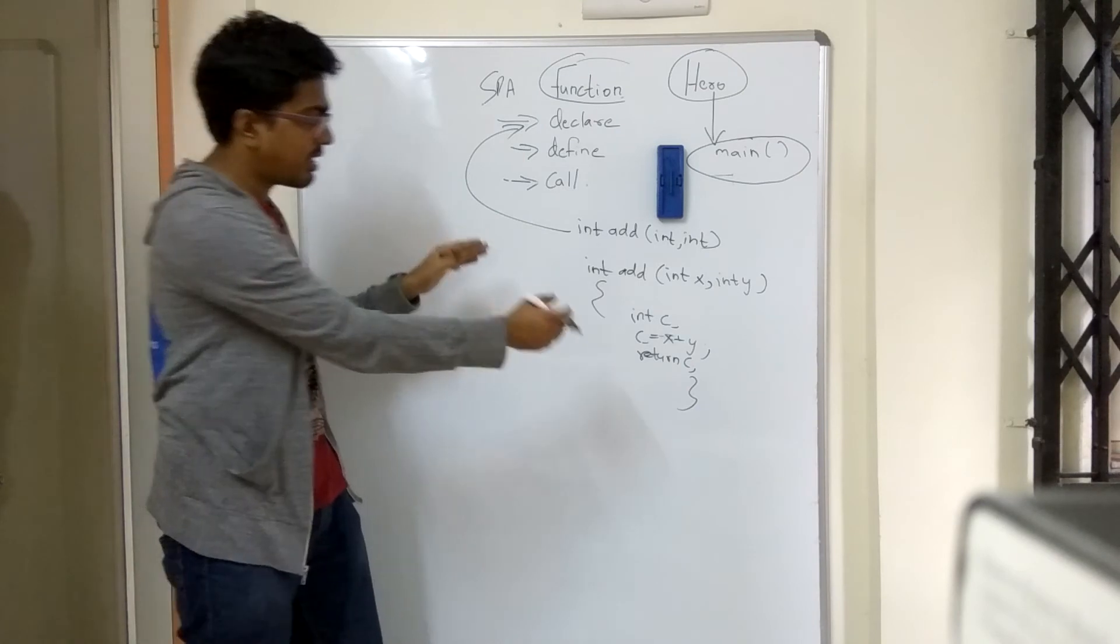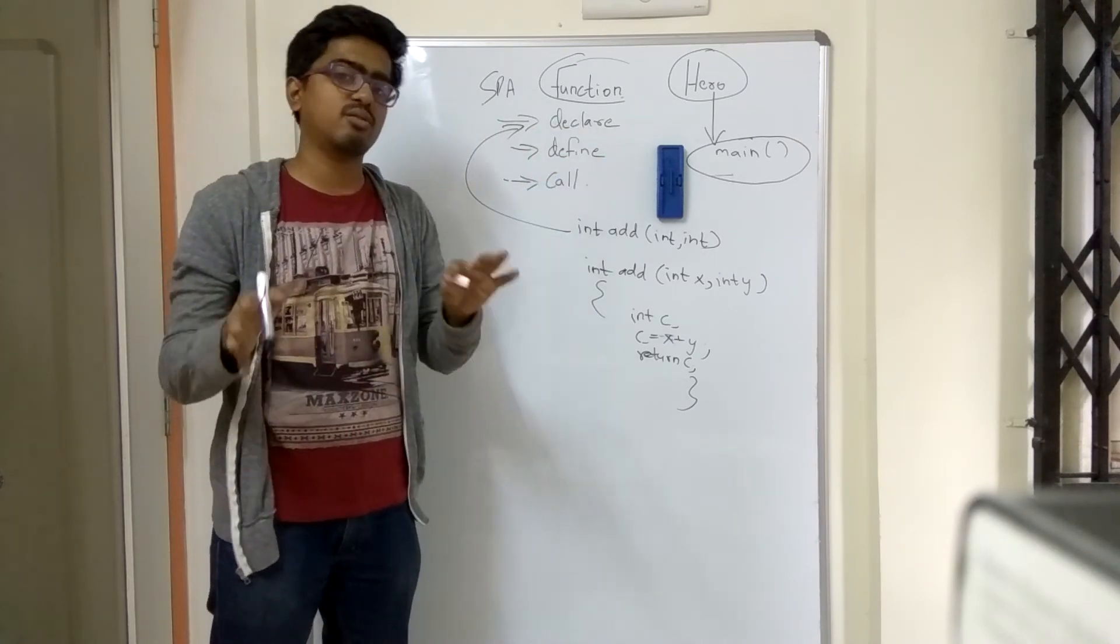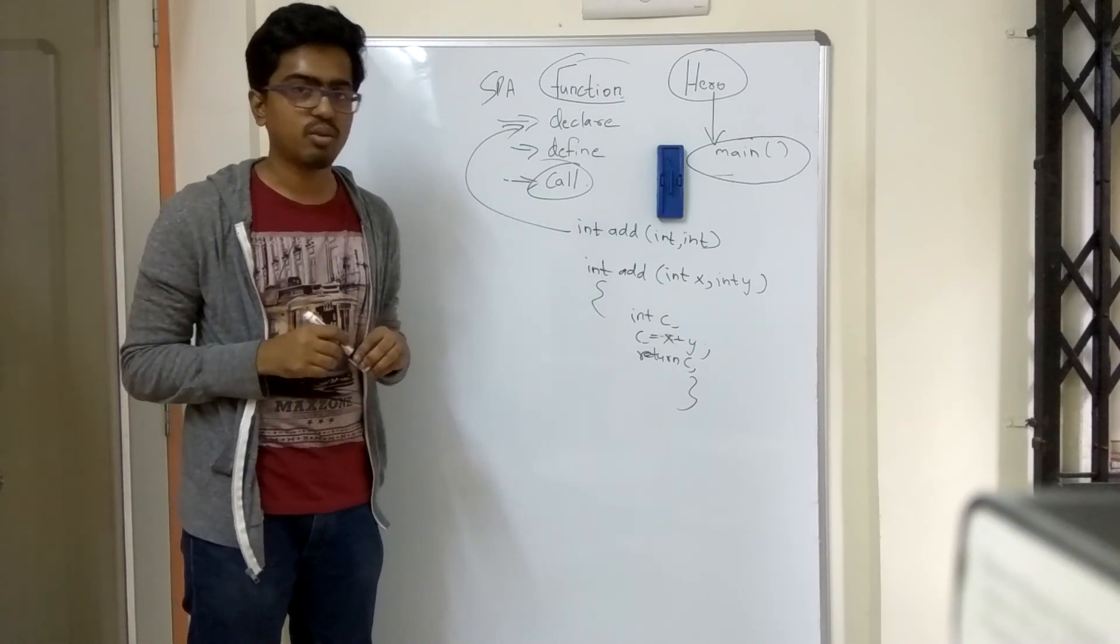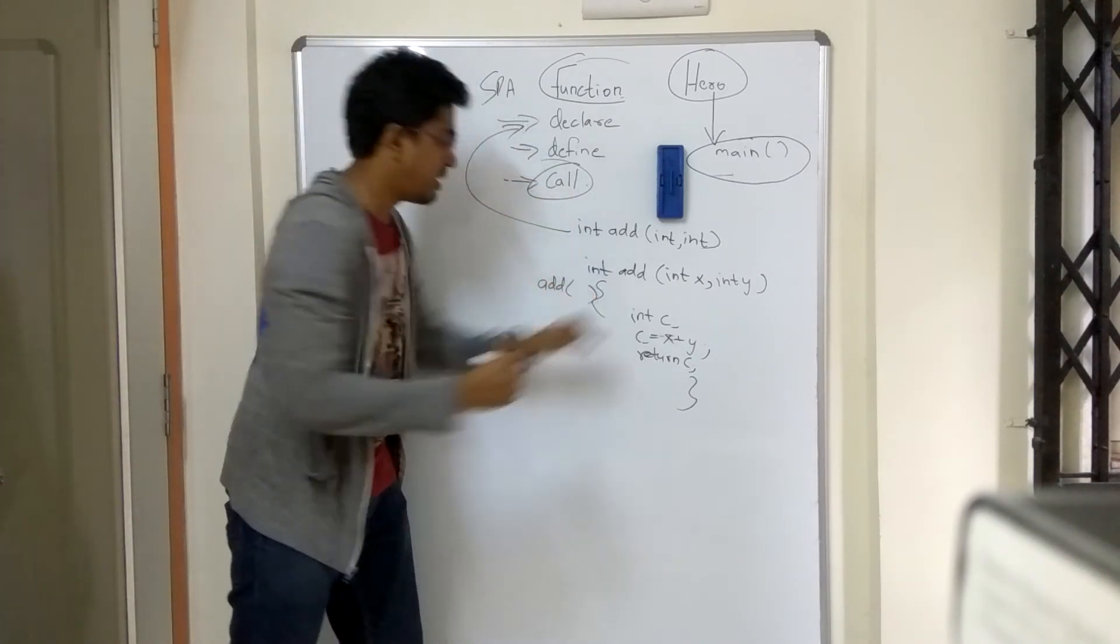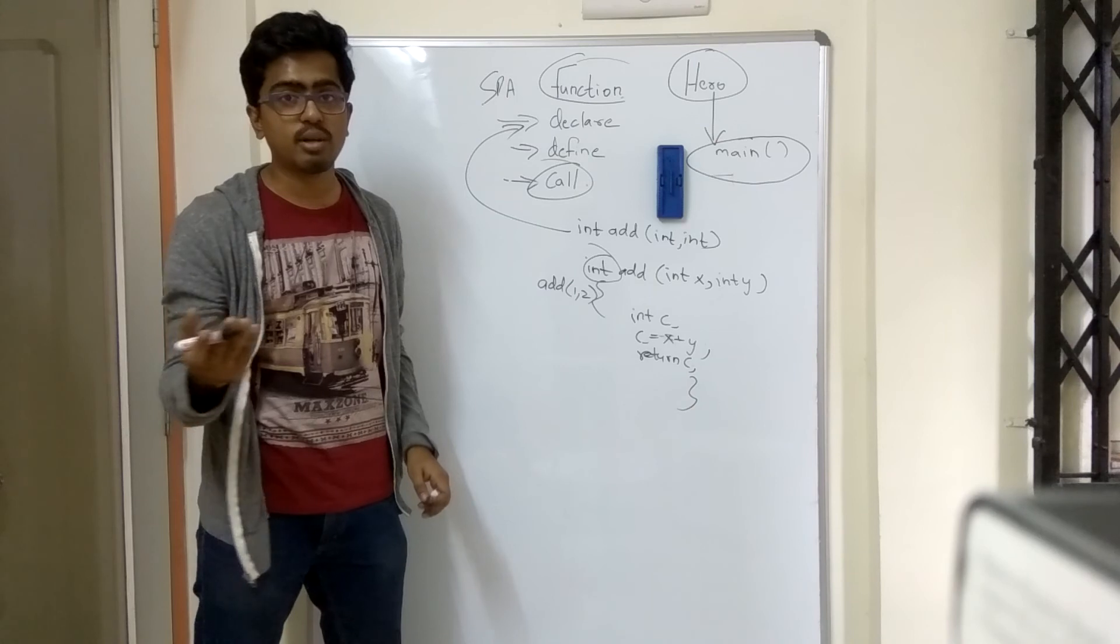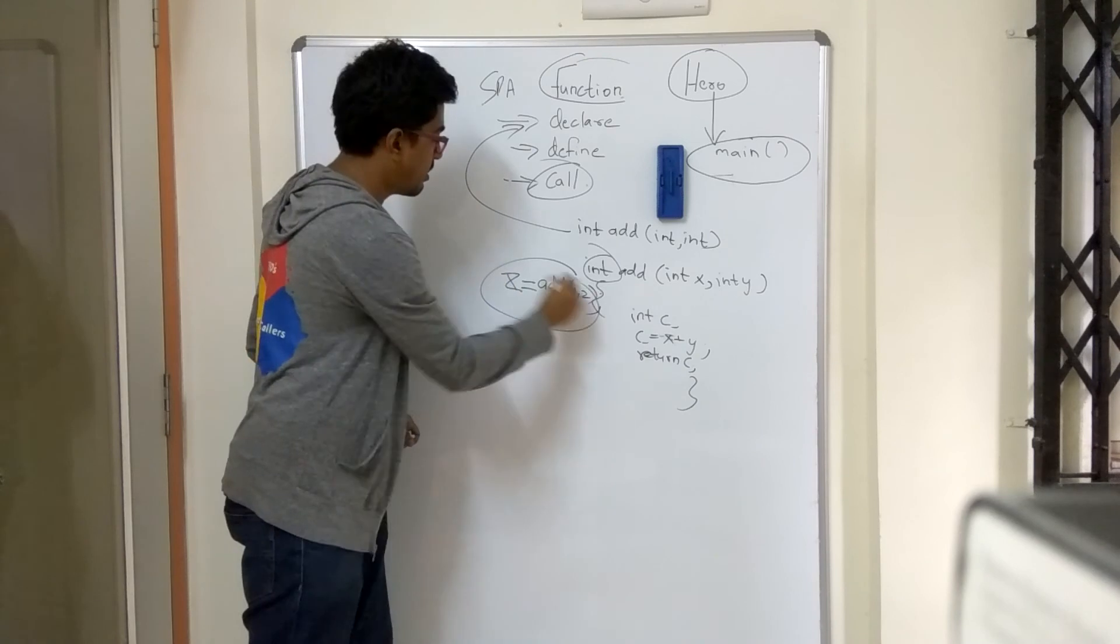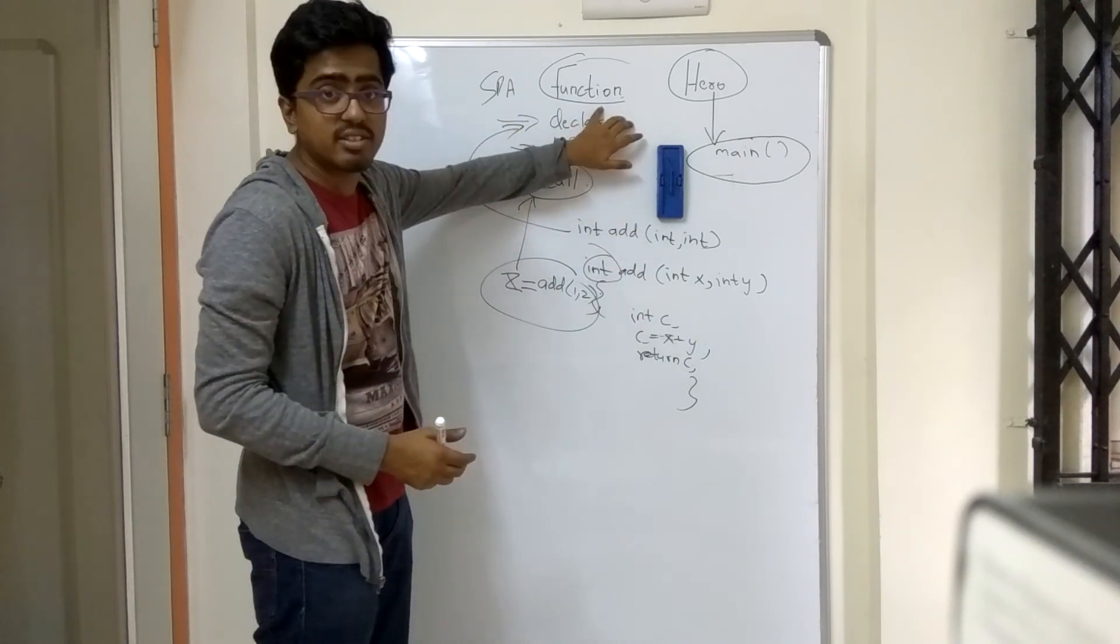But the basic idea is, this is what the definition looks like. And now is how do I put it to use. Maine usko declare kar diya. Maine bata diya aisa kuch hai. Maine woh kya karta hai woh bhi bata diya. Lekin abhi usko use kaise karenge woh kaise batahu. So now using it is a function call. So call will be the name of the function, the parameters I am going to pass to it. I need two integers, right? So I can take 1, 2. And phir woh return jo kar raha hai, woh return kis variable mein jayega. Woh jayega kisi aur variable mein. Suppose z. z equals add(1, 2). This becomes my function call. So this is the function part in basic. You have a definition, you have a declaration, and you have a call.